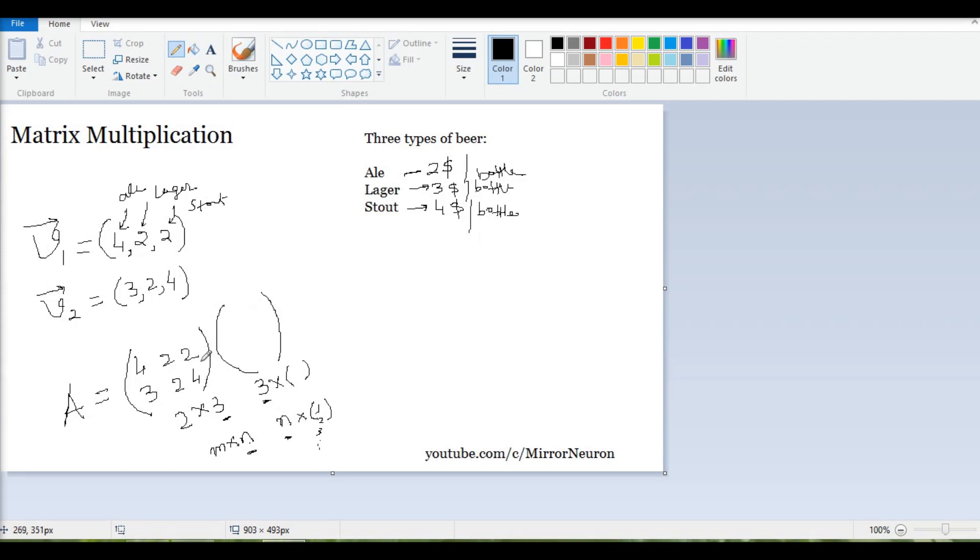So now we know the price of each type of beer: 2, 3, and 4. Now if I have to calculate how much I was making, what I'll do is multiply this value here, sum this value here, multiply these two numbers and sum these values here.